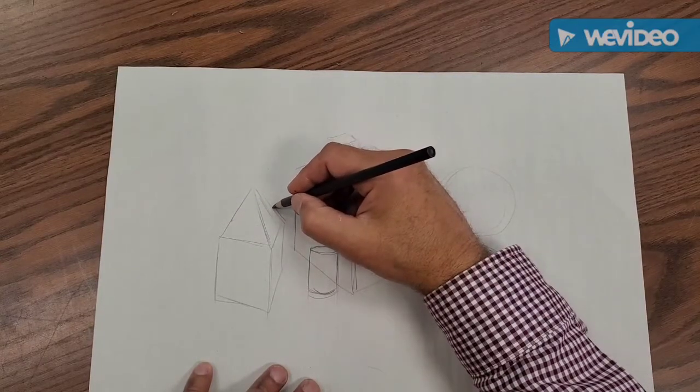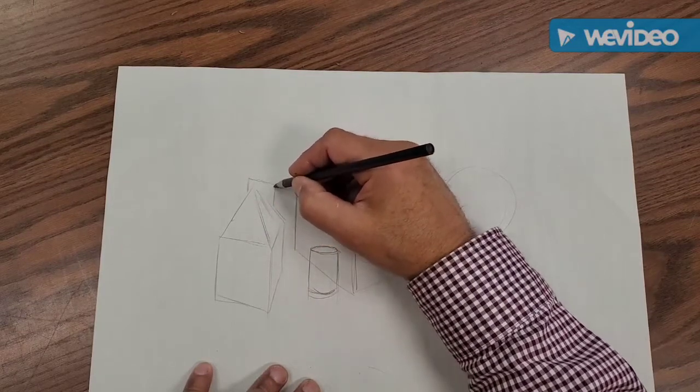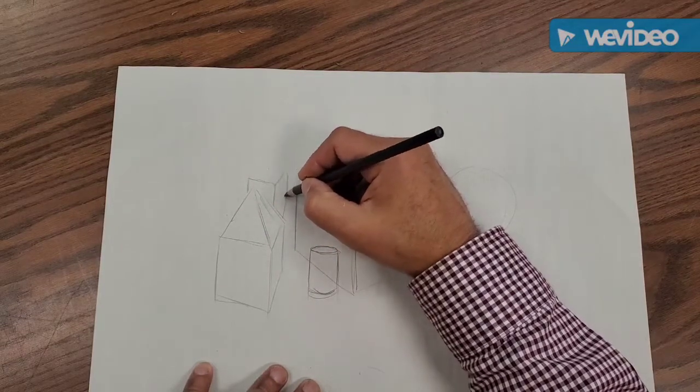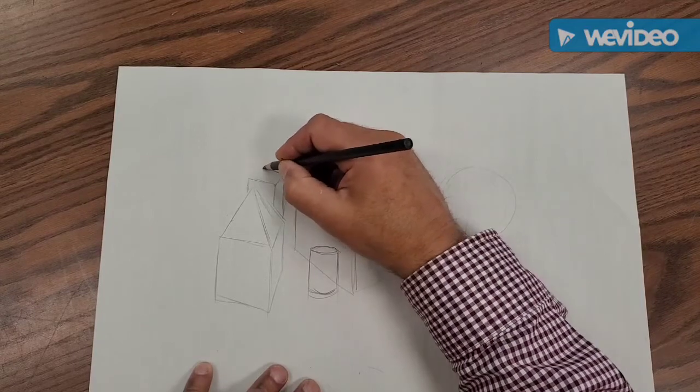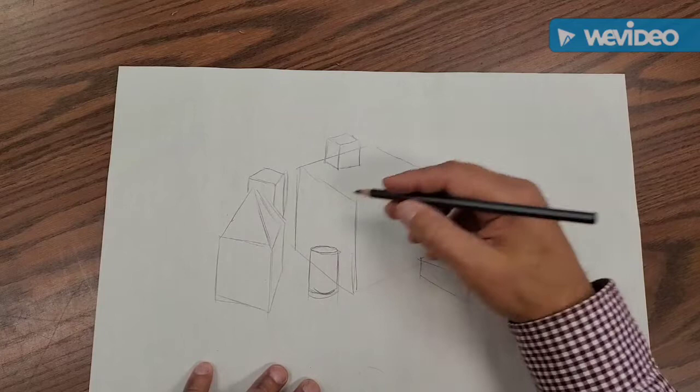And then in back, I can kind of see another box back here. It looks like this. It's kind of, it's very small, and it's behind the other one. And there is a box back there, but I'm going to leave that out.